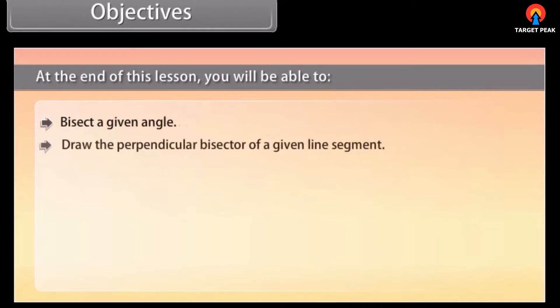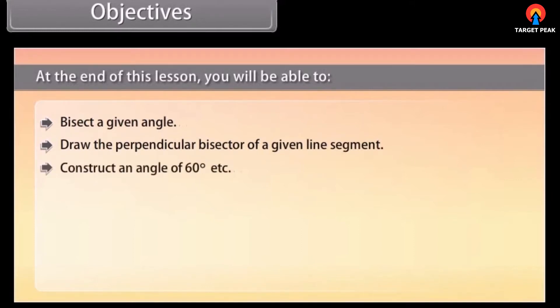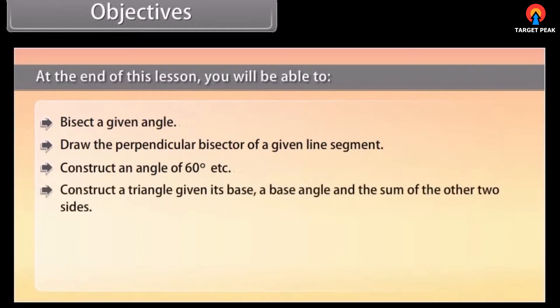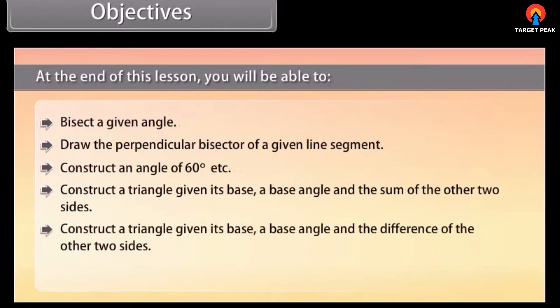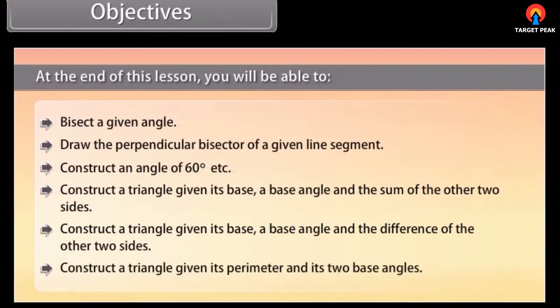At the end of this lesson you'll be able to: bisect a given angle; draw the perpendicular bisector of a given line segment; construct an angle of 60 degrees; construct a triangle given its base, a base angle and the sum of the two other sides; and construct a triangle given its perimeter and its two base angles.